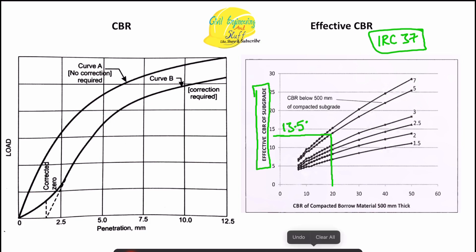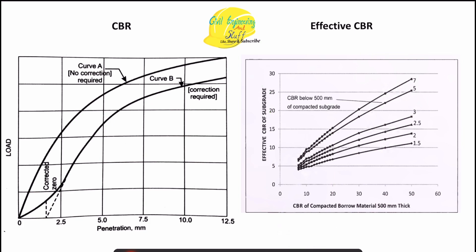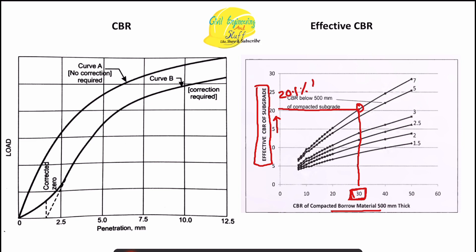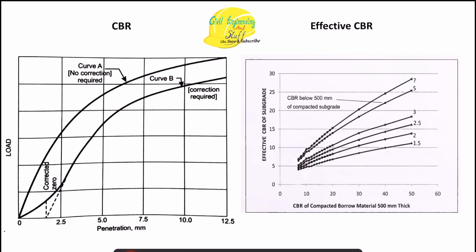Similarly, if the CBR of the compacted borrow material is 30 while the CBR of the borrow material below 500 mm is 7, using the graph the effective CBR — read from the y-axis — will be approximately 20.1%. This is how you find the effective CBR value.